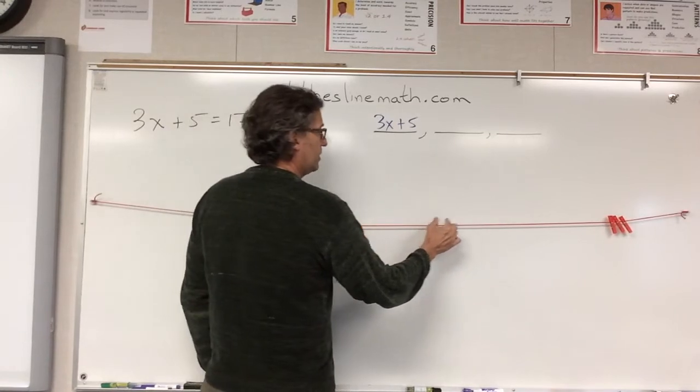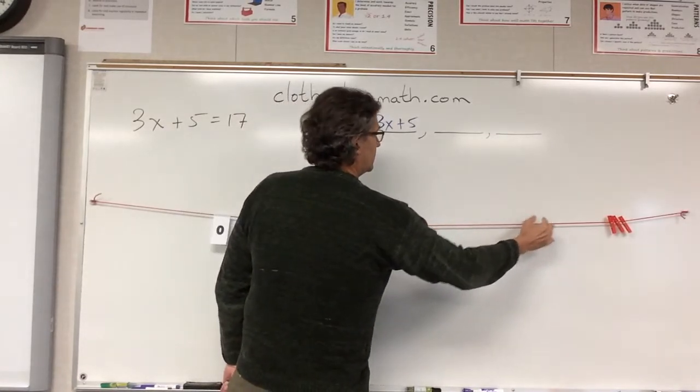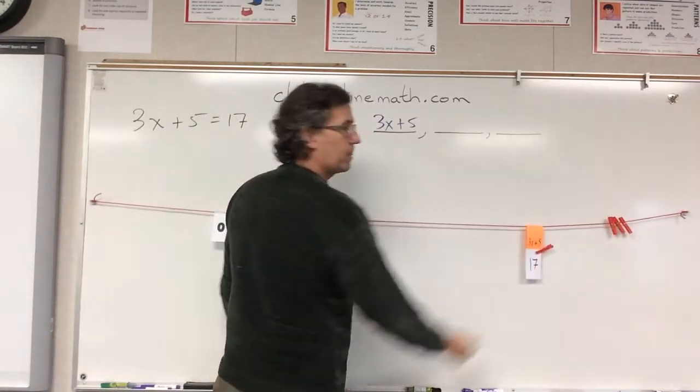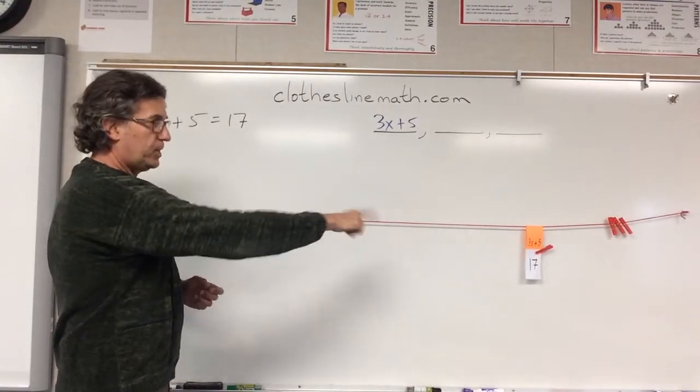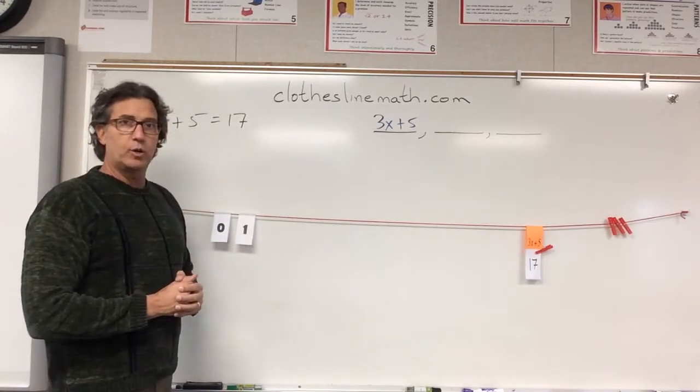And so we have that here, and we're now looking at 3x plus 5 is 17, and here's my 0 and 1.